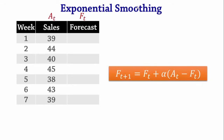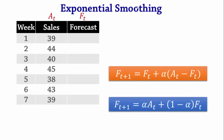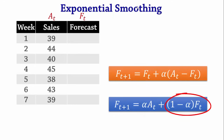To make calculations easier, this formula can be rewritten as FT+1 = alpha × AT + (1 − alpha) × FT. That is, the new forecast equals alpha times the last actual value plus (1 − alpha) times the last forecast value. We will be using this second formula for our calculations. Note that both formulas give the same result; the second one is just a little easier to use.